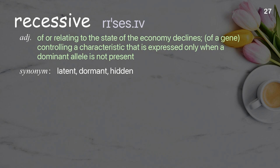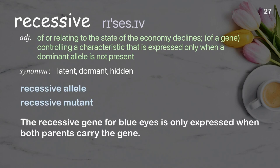Recessive: of or relating to a gene controlling a characteristic that is expressed only when a dominant allele is not present. Examples: recessive allele, recessive mutant. The recessive gene for blue eyes is only expressed when both parents carry the gene.